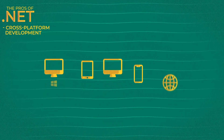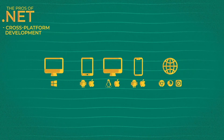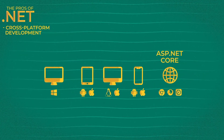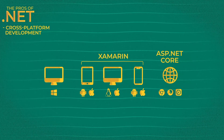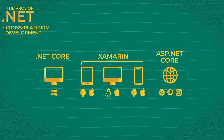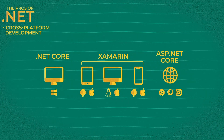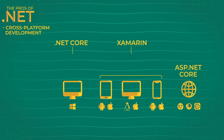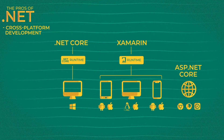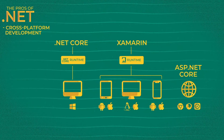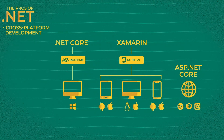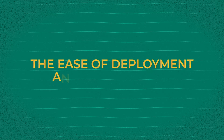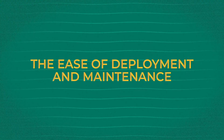In its current form, .NET includes tools for all the major operating systems, devices, and application types. It arms developers with ASP.NET for web apps, Xamarin for mobile and macOS, and .NET Core for numerous desktop application types, ranging from games to machine learning services. In terms of developer experience, smooth transition between the runtimes and unified code resources will allow developers to write one code base and launch it across the platforms with minimal changes to the application. The ease of deployment and maintenance is the next point.